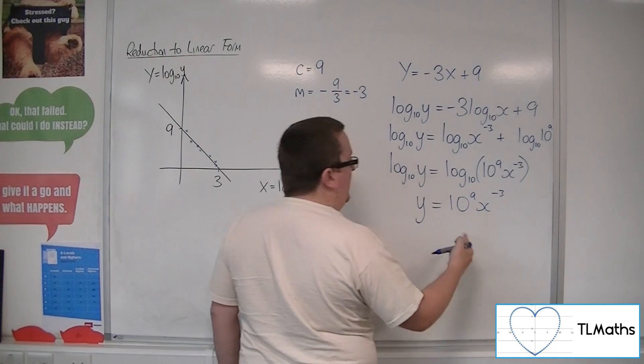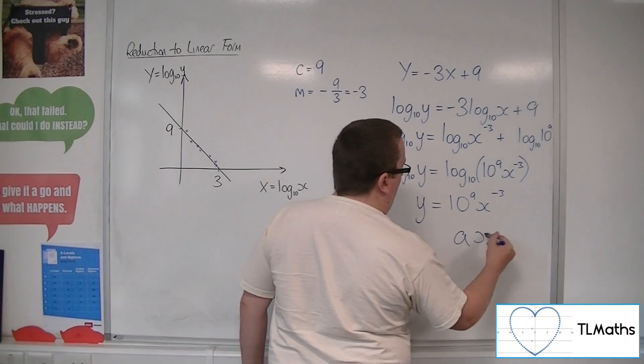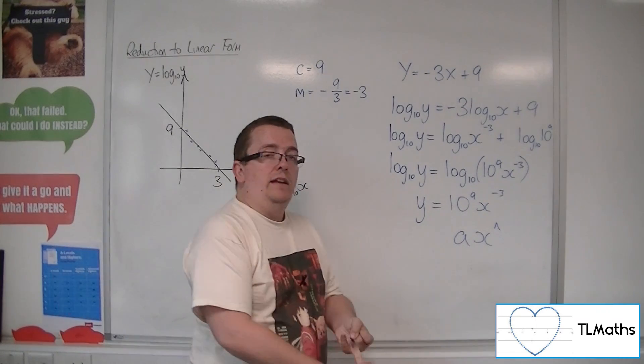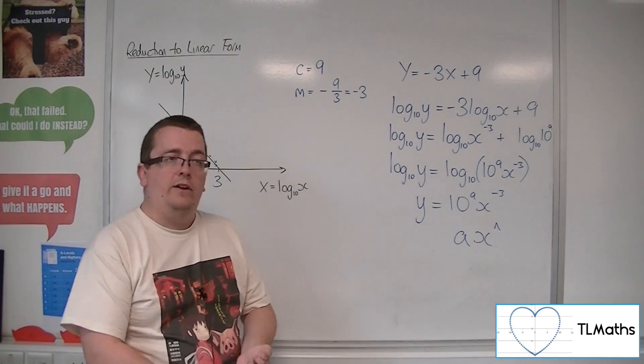And you can see that this is of the form AX to the N, where A is 10 to the 9, and N is minus 3.